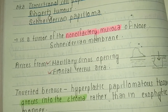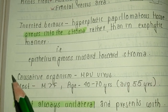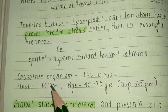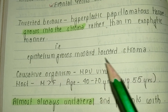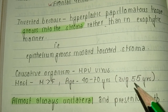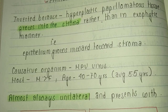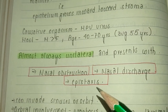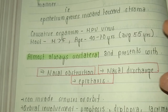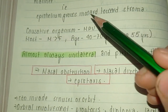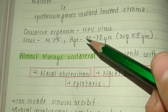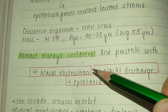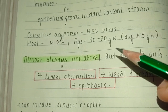Hence the name inverted papilloma. The causative organism is human papilloma virus. It affects males more than females, in the age group of 40 to 70 years, with an average of 55 years. It is almost always unilateral and presents with nasal obstruction, nasal discharge, and epistaxis.